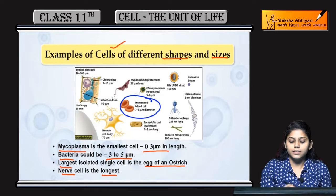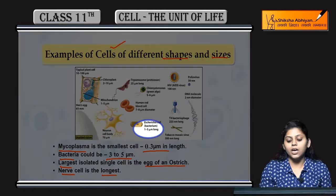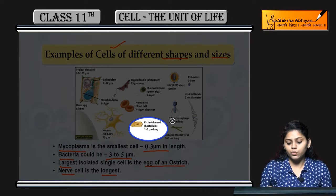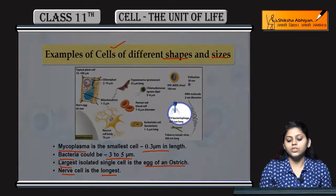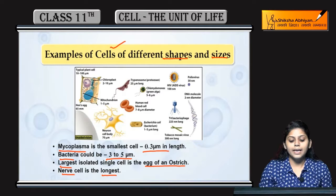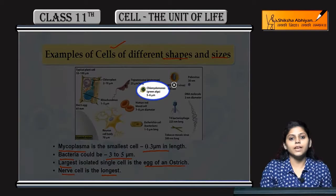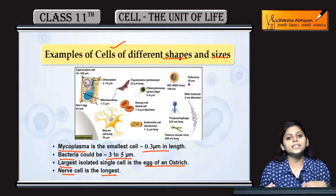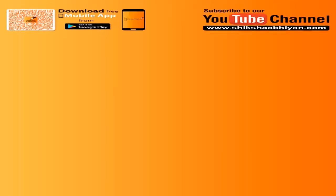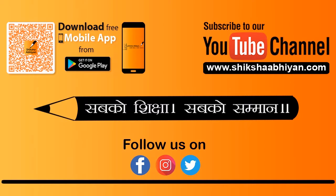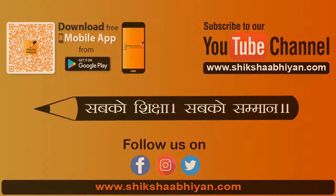The human red blood cell has a diameter of 7 to 8 micrometers. Bacteria is 1 to 5 micrometers long. Viruses are 2 to 5 nanometers long.